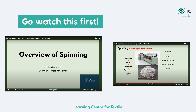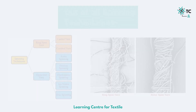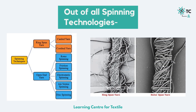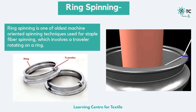So out of all various spinning techniques, let us see what ring spinning is. Ring spinning is one of the oldest machine-oriented spinning techniques used for staple fiber spinning, which involves a traveler rotating on a ring. This is how a ring and traveler looks like, and the image next to it shows the ring and traveler during the process on a ring frame.